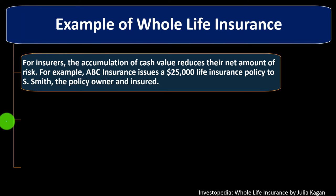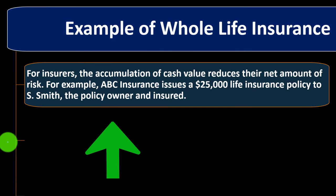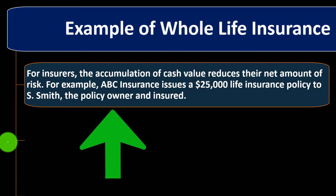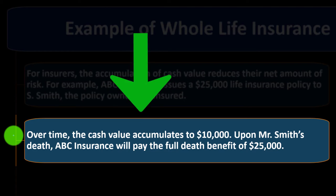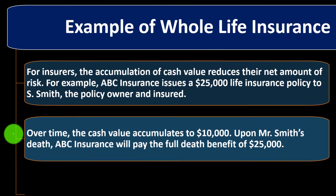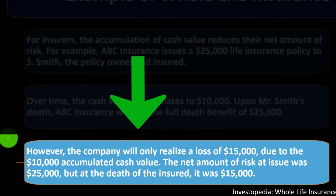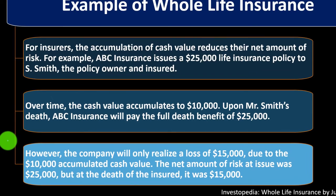An example of whole life insurance: ABC Insurance issues a $25,000 life insurance policy to S. Smith, the policy owner and insured. Over time, the cash value accumulates to $10,000. Upon Mr. Smith's death, ABC Insurance will pay the full death benefit of $25,000. However, the company will only realize a loss of $15,000 due to the $10,000 accumulated cash value. The net amount of risk at issue was $25,000, but at the death of the insured it was $15,000 because of the cash value accumulation.